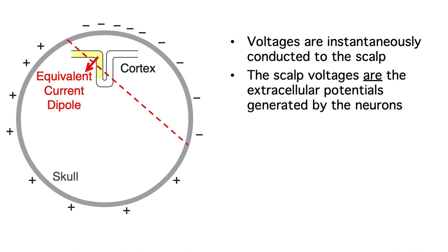Second, the voltages we record from the scalp are the actual extracellular voltages produced by the neurons during neurotransmission. When you record someone's EEG, you're picking up the actual voltages created by the neurons in that person's brain. This is very different from fMRI, where you're seeing the effects of neural activity on blood oxygenation, which takes several seconds.